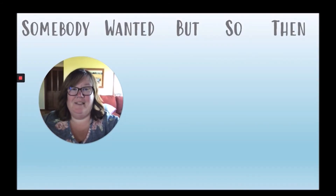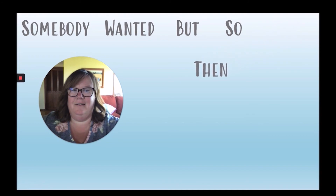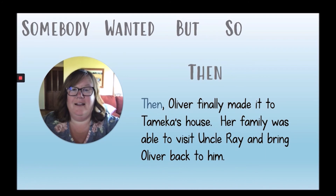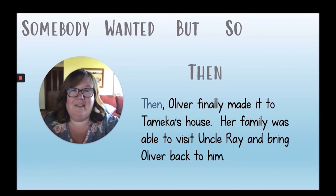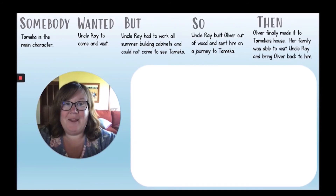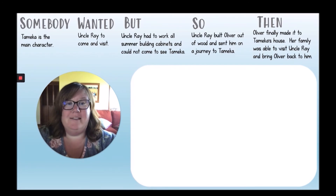Readers, we've come to the end of our story, so now we know how the problem was resolved. Then, what happened after Oliver's journey? Then, Oliver finally made it to Tamika's house, and her family was able to visit Uncle Ray and bring Oliver back to him. This solved Tamika's problem, because the whole time her main goal was to see Uncle Ray — that is what she wanted. Now that we've reached the end of our text, we're going to use our strategies and the notes that we took to help us write a summary of the story.